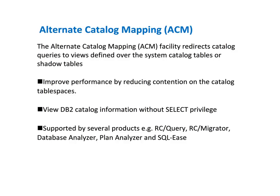The alternate catalog mapping, known as ACM, will redirect catalog queries to either views or shadow tables. This can improve performance in a number of CA DB2 tools products and reduce the need for select authorization to the catalog.